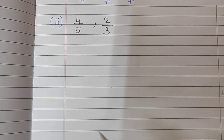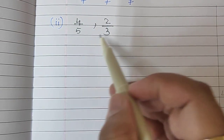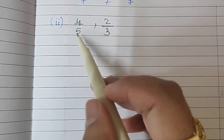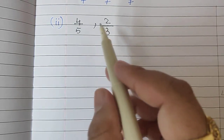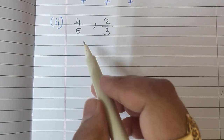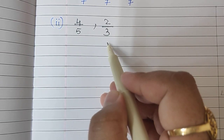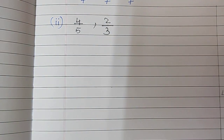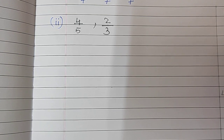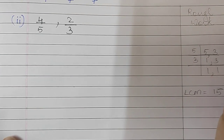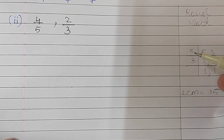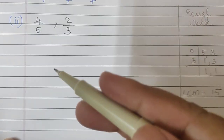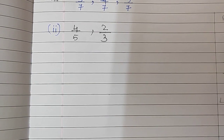In sum number 2, the question is 4/5 and 2/3. We have to find a number between these two fractions. The denominators are not the same, so we have to first equalize the denominator, and then only we can find the numbers between the fractions. We will find the LCM — 5 times 3 is 15, so LCM is 15. Our new denominator should be 15.